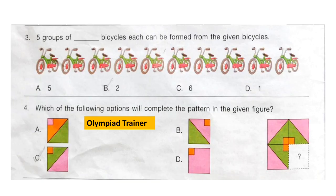Question 3: Five groups of dash bicycles each can be formed from the given bicycles. Count the number of bicycles and make five groups. The correct answer is option B: 2.